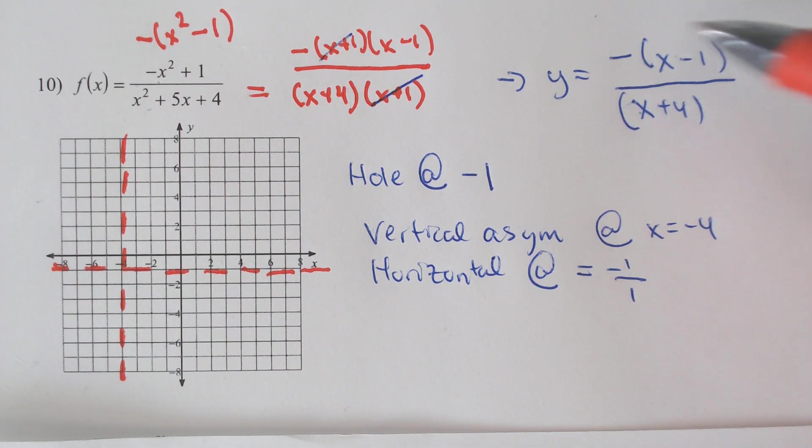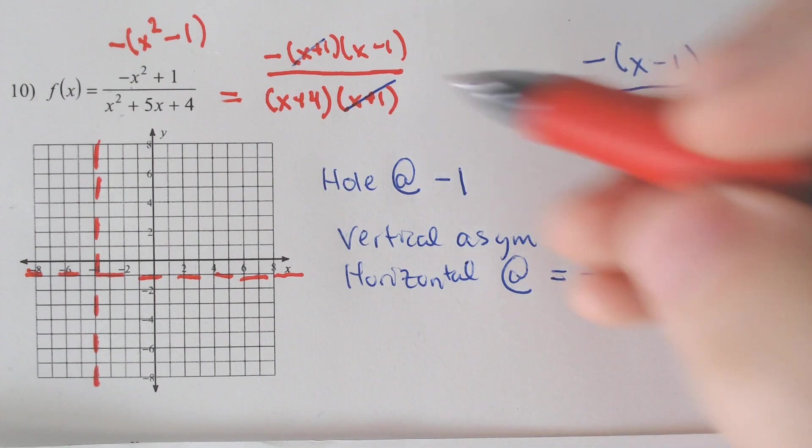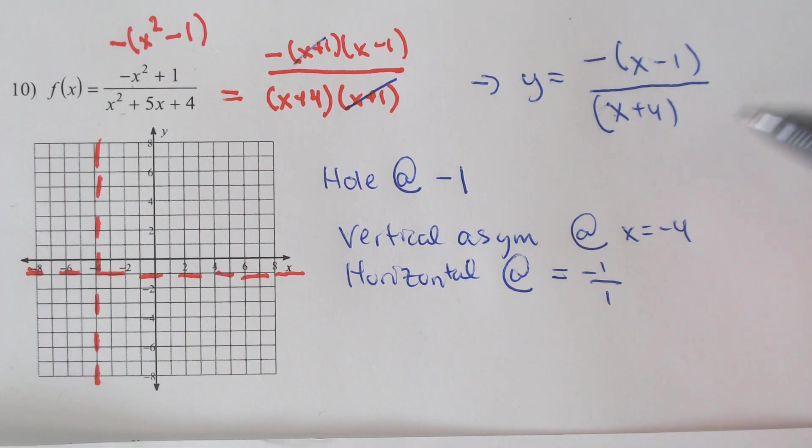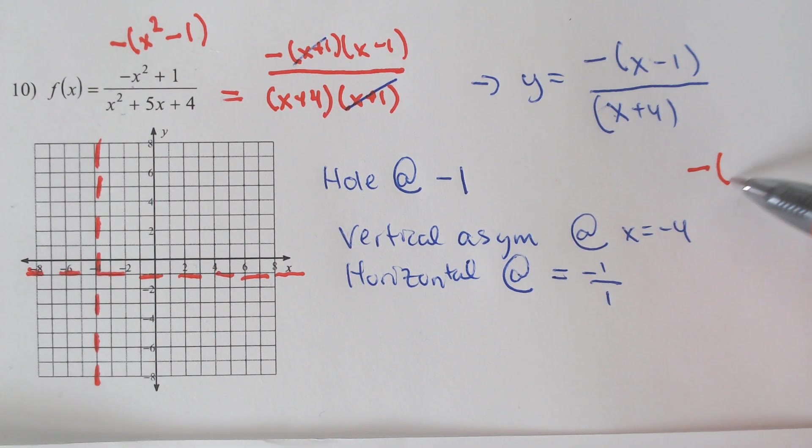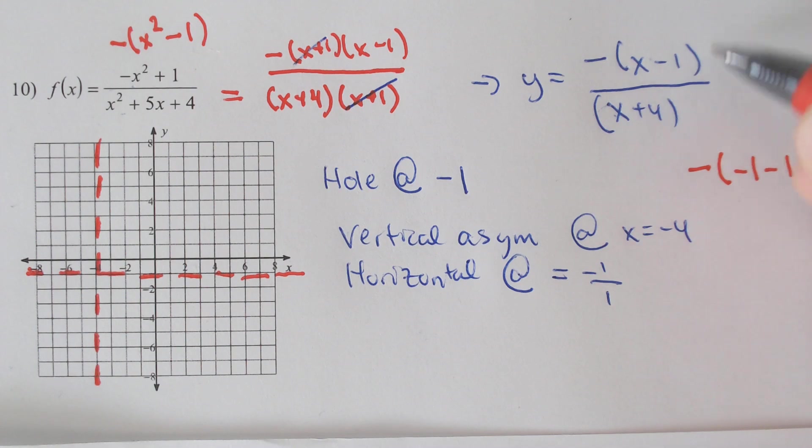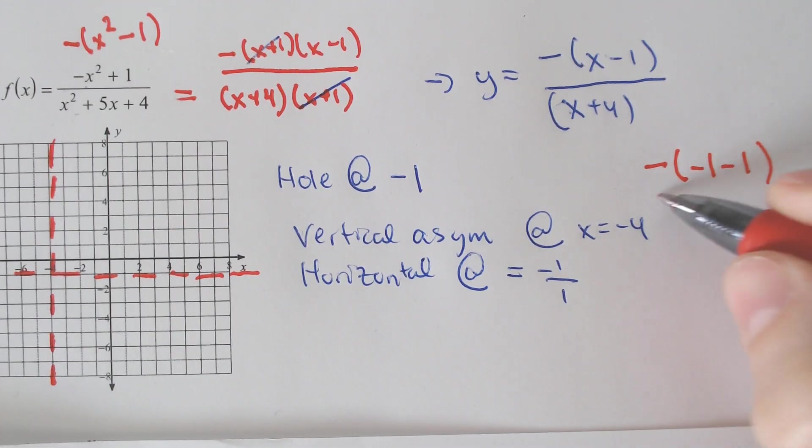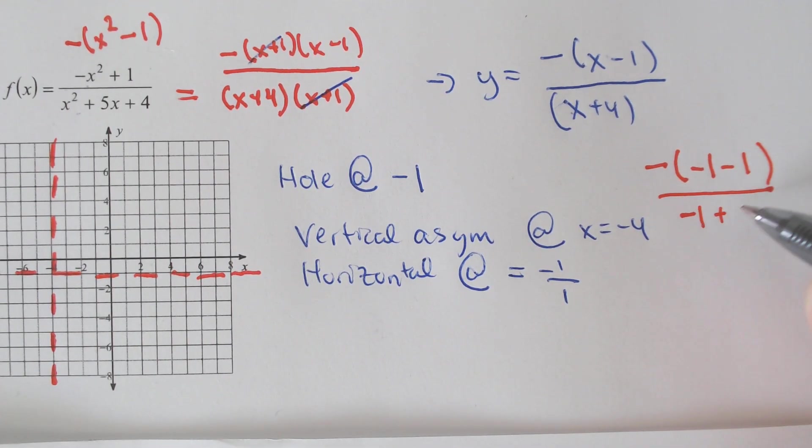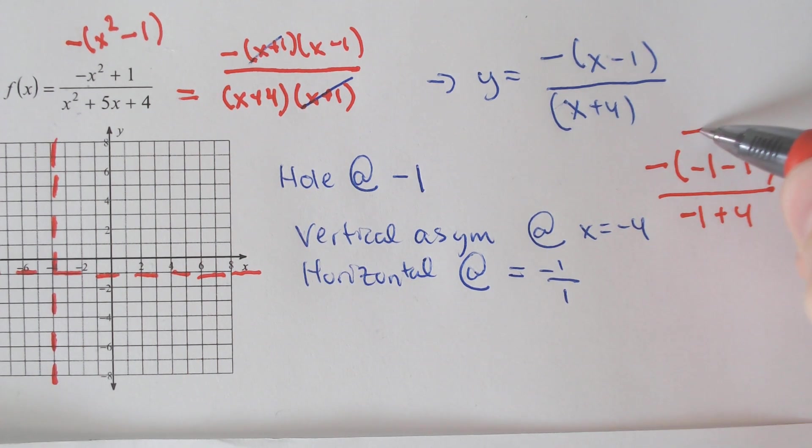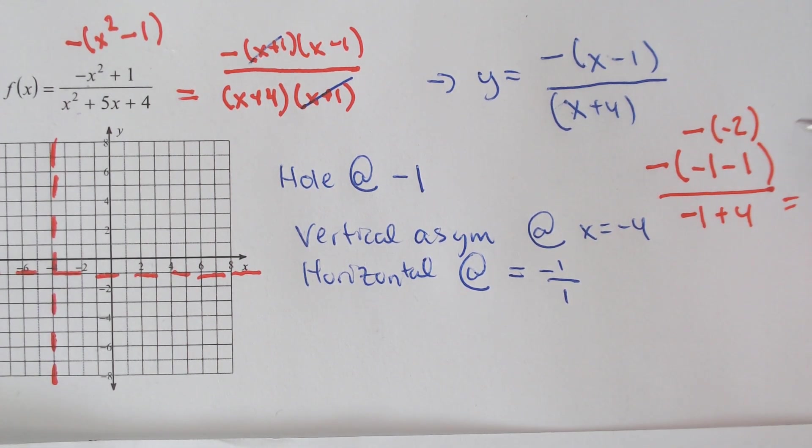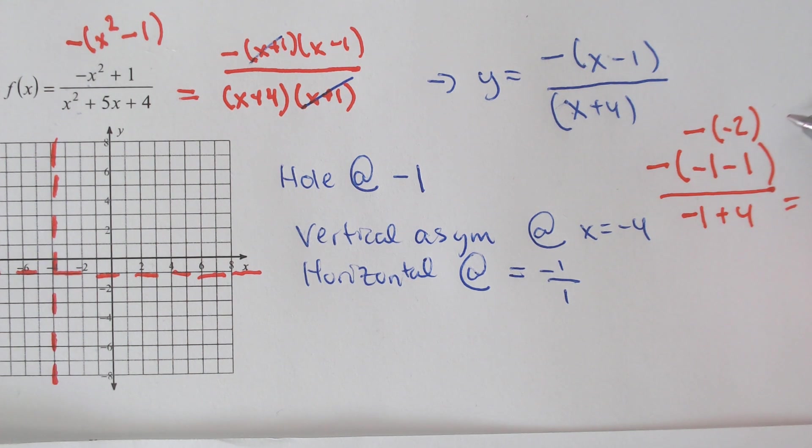So if we plug it into this newer version because it canceled, it'll work. What is negative negative 1 minus 1—I'm plugging it into here—over negative 1 plus 4? Well that's a math problem. It would be negative negative 2 divided by negative 3.